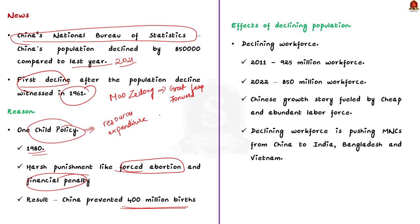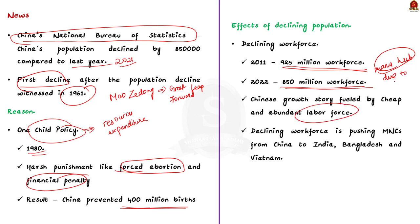They were quite successful in controlling the population, but this policy backfired, resulting in a reduction in population. The first problem is the reduction in the working-age population. In 2011, China's labor force was around 925 million, but in 2022, this has declined to 875 million. This is a major concern for China because the main reason why China became the global manufacturing hub is the availability of cheap and abundant labor. But right now, the labor force is contracting and wage rates are also increasing. Due to this, many MNCs are shifting their base to countries like India, Bangladesh, and Vietnam, affecting China's economic growth.